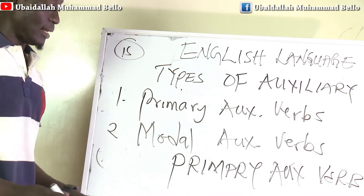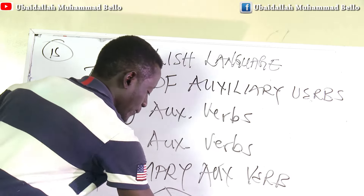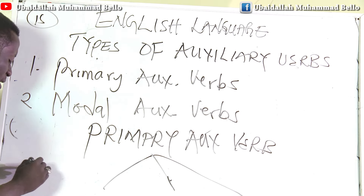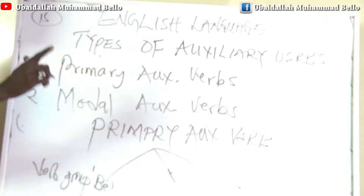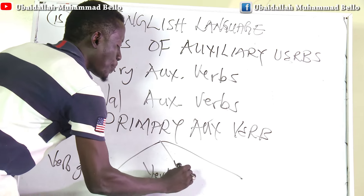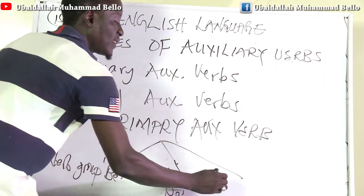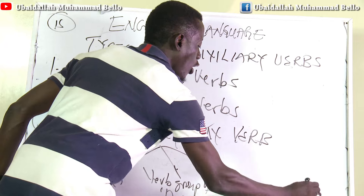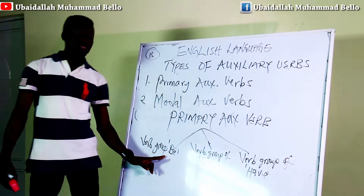Primary auxiliary verbs are further categorized into three groups. The first group is the verb group of BE, the second is the verb group of DO, and the last one is the verb group of HAVE.